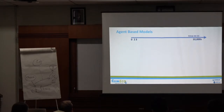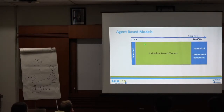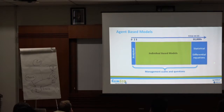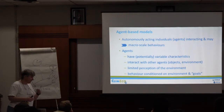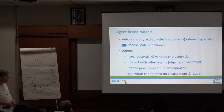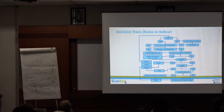Agent-based models are particularly important for management questions that fall in a midway range — more than a small number you can solve analytically, but not yet up to the tens of thousands where statistics and differential equations work best. The basic idea is that you're playing out the decision processes of actors. You define agents based on how they interact with their environment, how they perceive it, and what their characteristics are — with behaviour conditioned on rules.